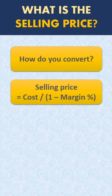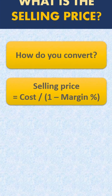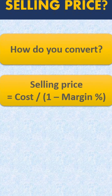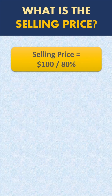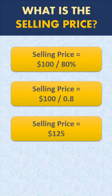How do you convert? Here is the formula: selling price is cost divided by 1 minus margin percent. In this case, selling price will be equal to $100 — which is the cost — divided by 1 minus 20%. 1 minus 20% can also be written as 80%, or simply 0.8. So $100 divided by 0.8 is $125.